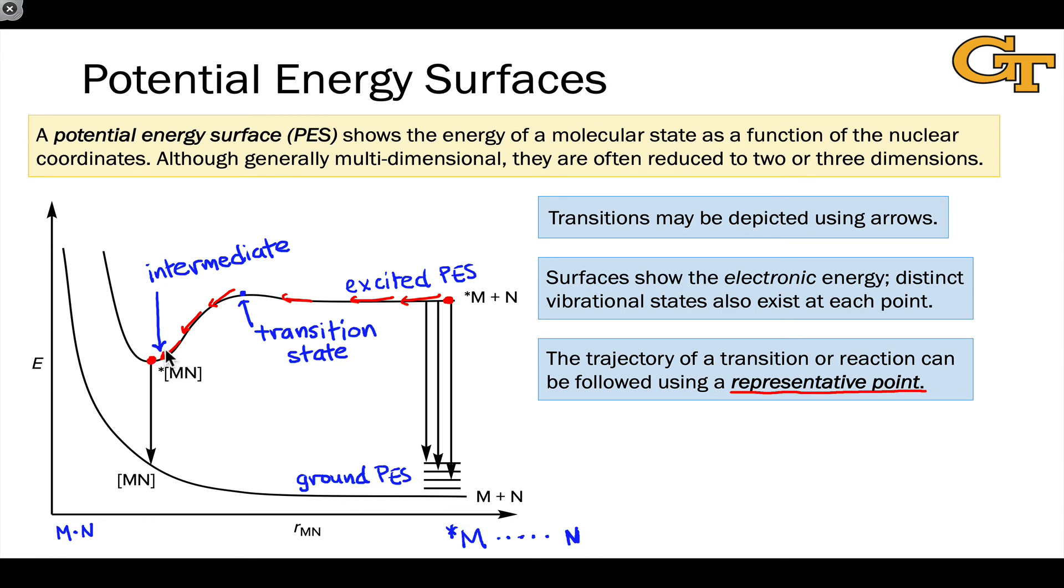And this is the exciplex. That exciplex can emit a photon. And we can talk about the representative point moving from one potential energy surface to another. That is a photophysical transition. Here, it's a radiative transition.